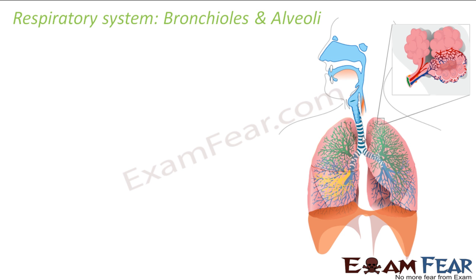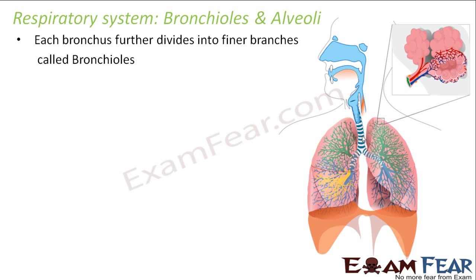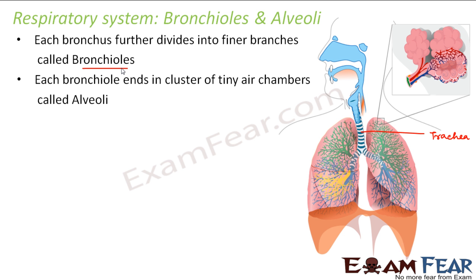Next are bronchioles and alveoli. Each bronchus further divides into finer branches called bronchioles. The trachea enters the lungs as bronchi, and each bronchus then further divides into smaller branches to form bronchioles. Each bronchiole ends in a tiny cluster of air chambers called alveoli. So the pathway is: trachea divides into bronchi, bronchi divide into bronchioles, and each bronchiole ends in alveoli.